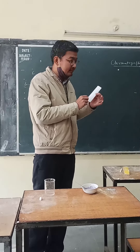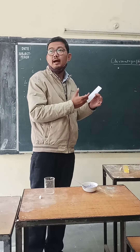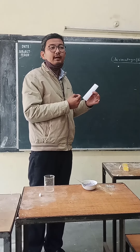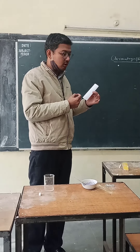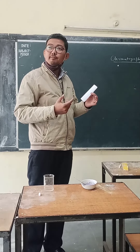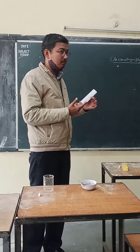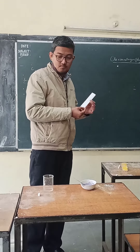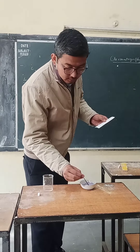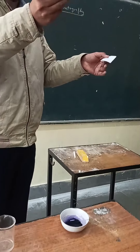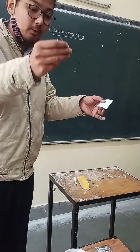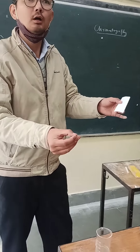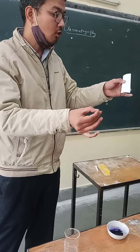Then we find the RF value — the RF value for the red ink and the RF value for the blue ink. I will give you the formula. You have to be very, very cautious while you add a drop of ink on the paper.